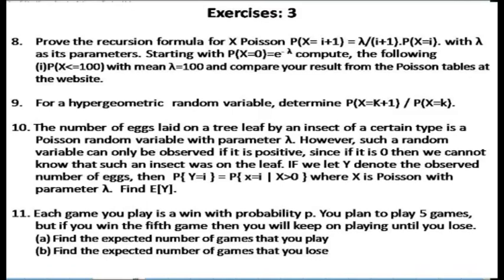Also compute P(X ≤ 100) when the Poisson mean λ equals 100, and compare your results using available tables. Question 9: for a hypergeometric random variable, determine P(X = k+1) / P(X = k) — again finding a recursion formula. Question 10: the number of eggs laid on a tree leaf by an insect is Poisson with parameter λ, but can only be observed if positive. If Y denotes the observed number of eggs, then P(Y = i) = P(X = i | X > 0). Find E[Y], the conditional expectation of X given X > 0.